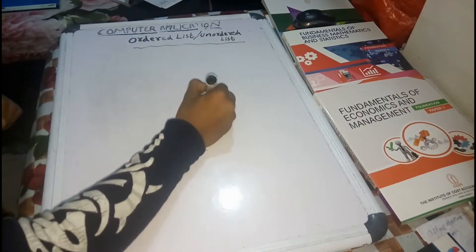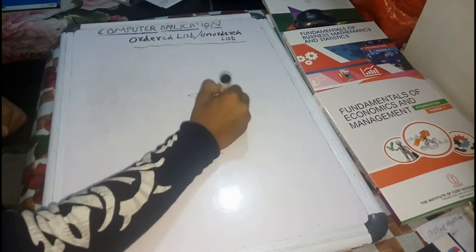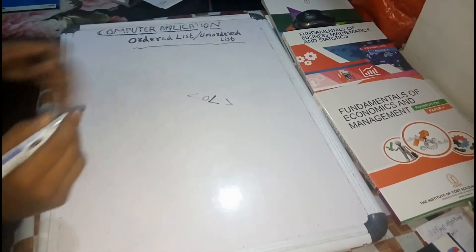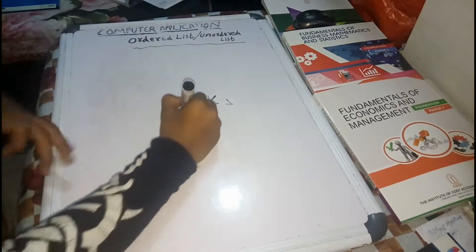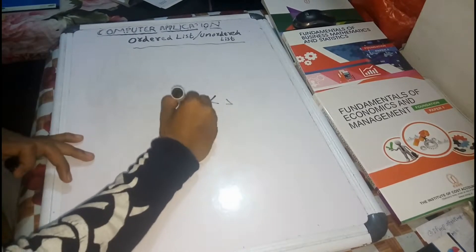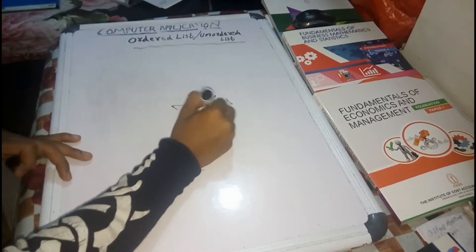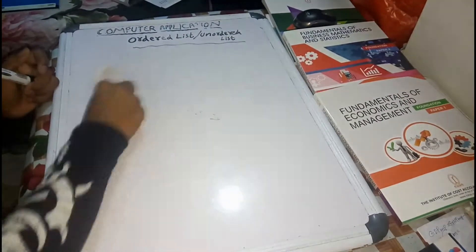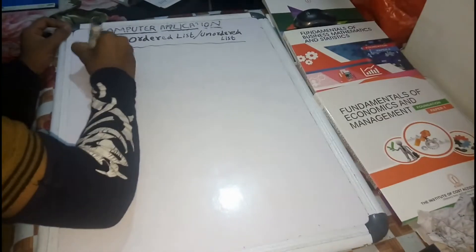So today, one new ordered list — it's an unordered list. I'll find one new tag. I have done this. Then I'll try it out. Okay, then we can do HTML.